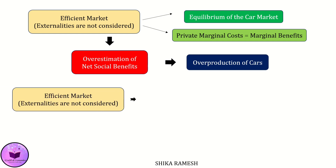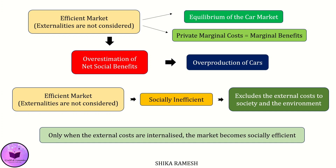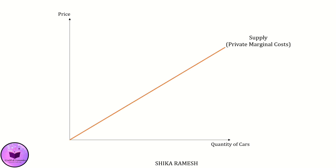When referring to an efficient market for automobiles in the traditional sense, where only direct costs and benefits are considered, it may actually be economically and socially inefficient as it excludes the external costs to society and the environment. Only when the external costs are internalized does the market become socially efficient. Let's see this with the help of a diagram.